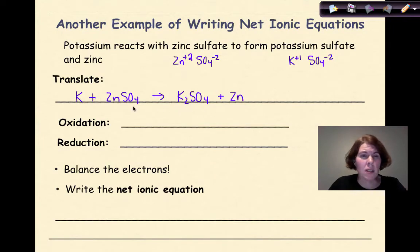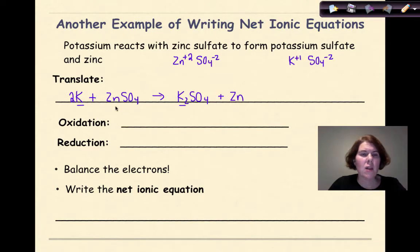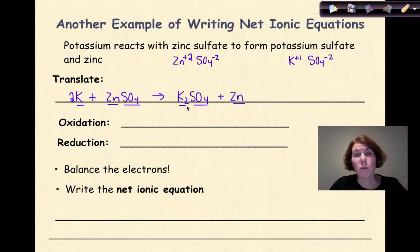The next thing I want to do is balance this. I look at this and say one K, two Ks, so I'm going to need to put a two in front here so that K is balanced. Let's look at the zinc: Zn, Zn — that's balanced. And here's my sulfate: one SO₄ polyatomic, one SO₄ polyatomic — we're balanced. Not that bad.